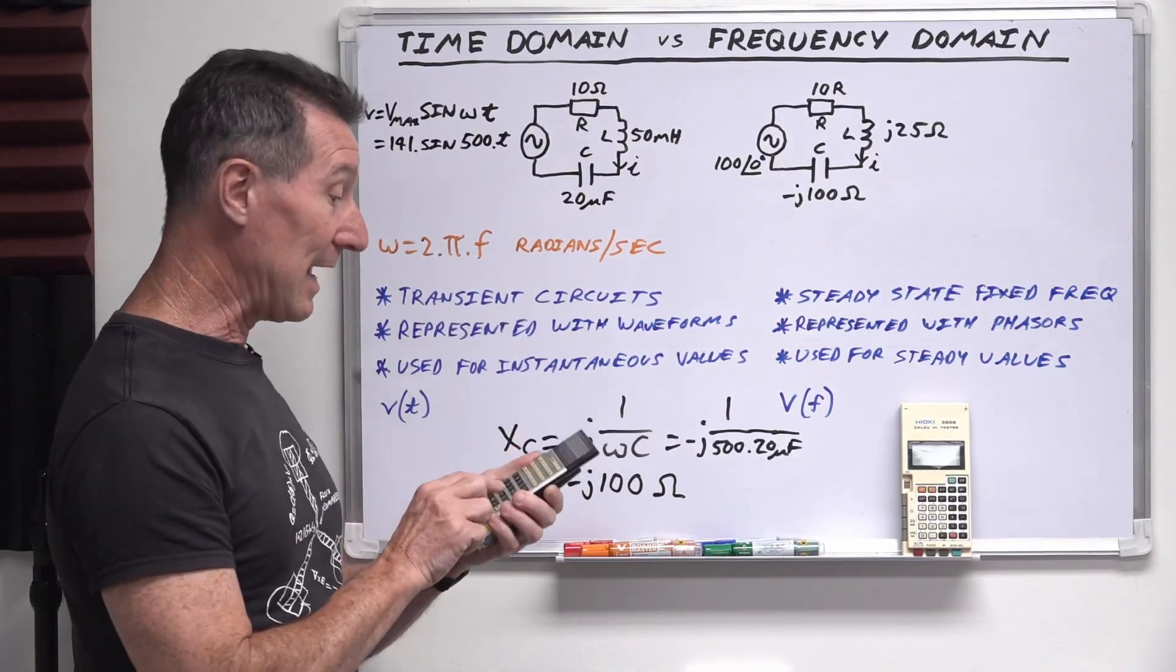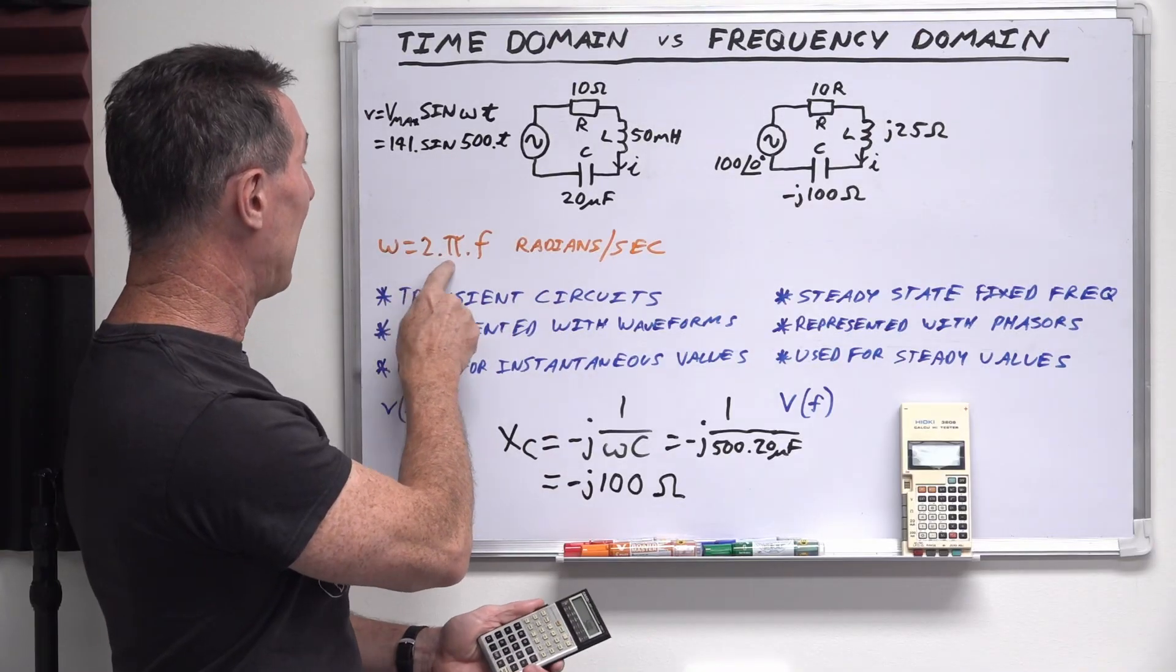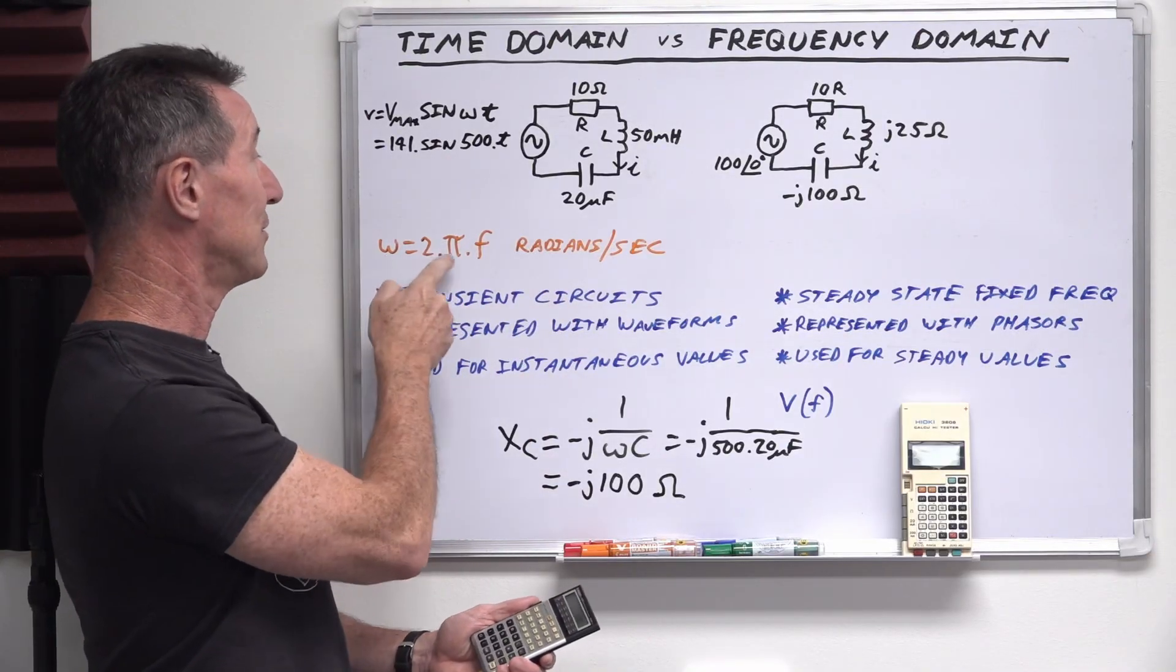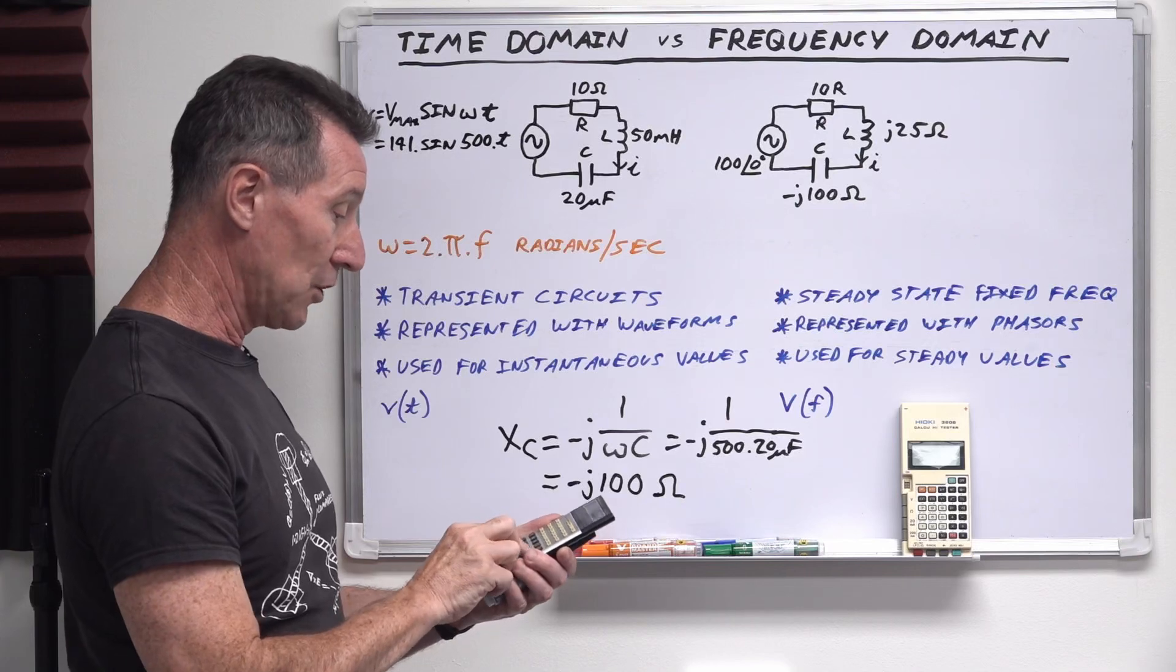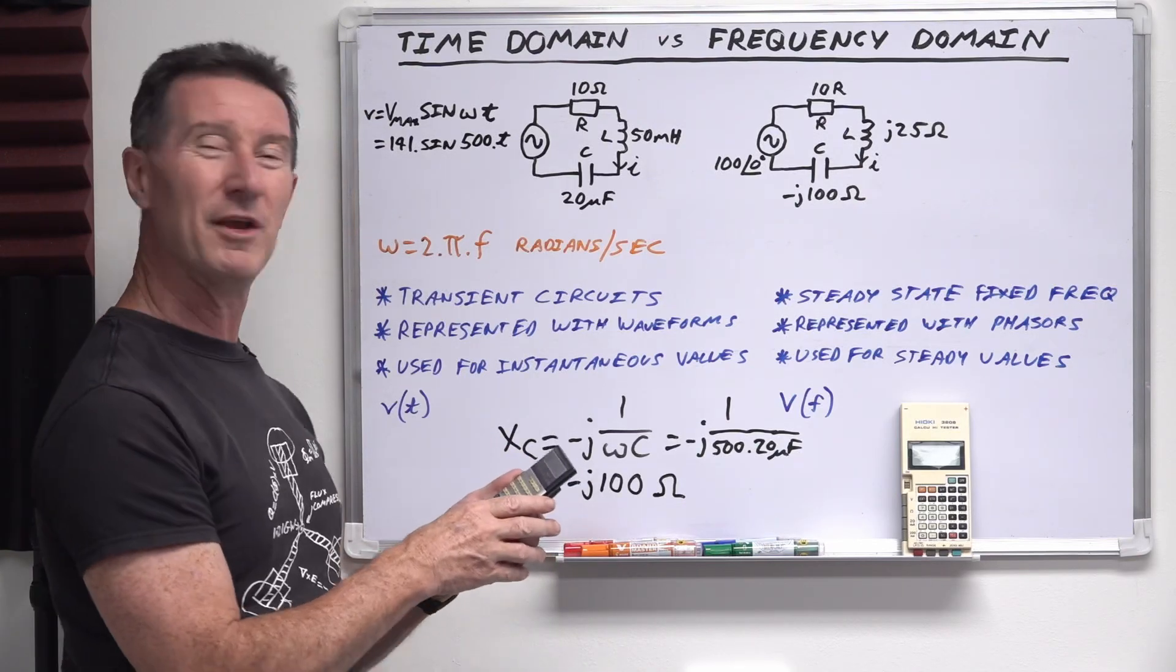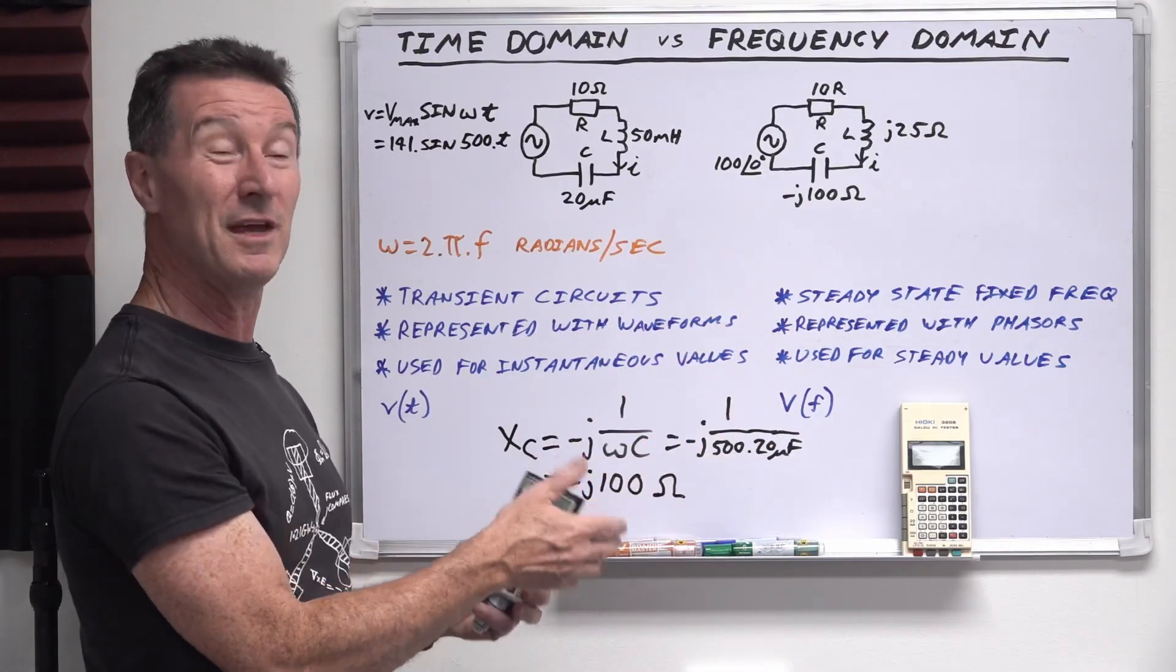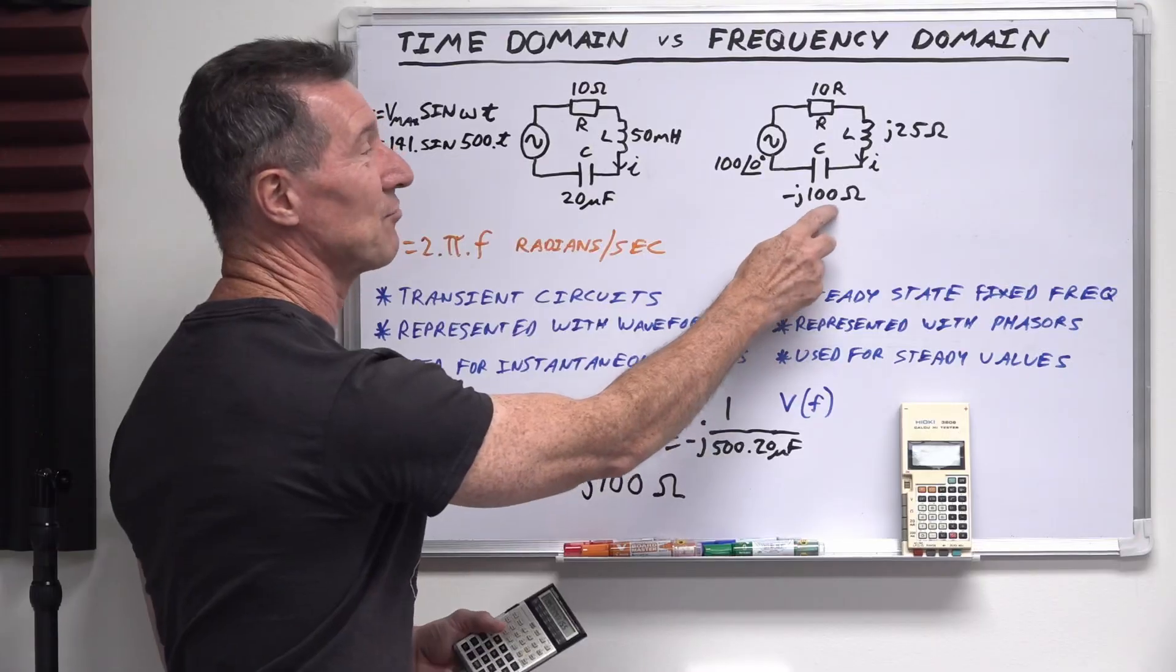And so we've got the complex representation of our 20 microfarads at the one particular frequency, which is 2 pi f in radians per second is 500 here. So what is that? Frequency, get your confuser out again, and 500 radians per second divided by 2 pi. And that's going to give you a value of 79.57 hertz. So that's just the frequency that we're dealing with here. Nothing special about it. Just gives a nice round value there.